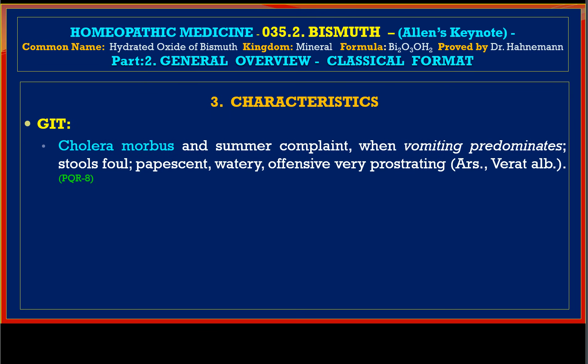Vomiting with convulsive gagging and inexpressible pain after laparotomy; similar symptoms are encountered in Nux vomica and Staphysagria. In cholera morbus and summer complaints when vomiting predominates, stools are foul, watery, offensive, and very prostrating; similar symptoms are found in Arsenic and Veratrum album.